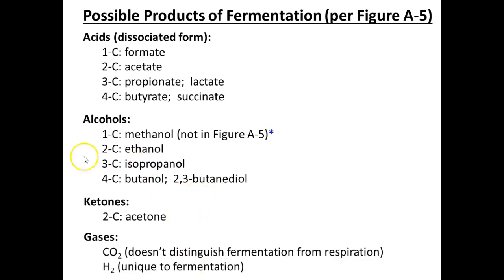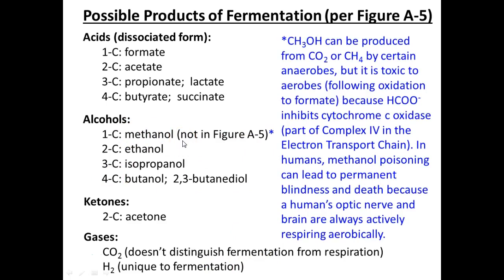Ketones are also produced — acetone being one. Gases include carbon dioxide and hydrogen gas. Carbon dioxide is produced by aerobic respiration too, so detecting it alone doesn't tell you whether the organism is fermenting. Hydrogen gas, on the other hand, is unique to fermentation — it is only produced under fermentation conditions. Methanol is toxic to humans; it interferes with our electron transport chain and can lead to serious permanent blindness, because the optic nerve is always respiring. Don't mess around with methanol.